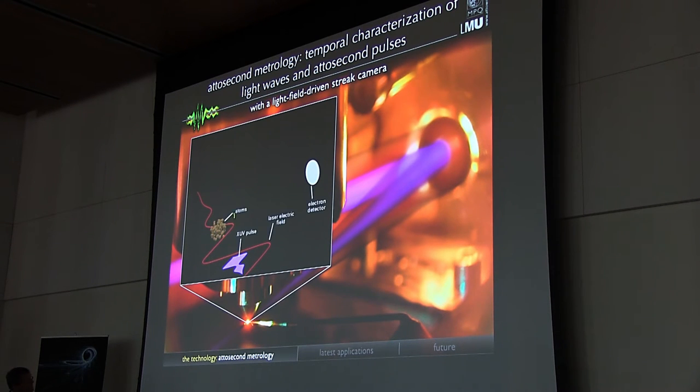So to this end, we expose an ensemble of, again, neon atoms to this XUV pulse in the presence of the fuse cycle laser field that was previously used for its generation. So thanks to this fact, the two are perfectly synchronized to each other. This is extremely important. And since this strong field is present, the photoelectrons kicked off by the XUV pulse can be decelerated or accelerated by this laser field depending on their moment of release.